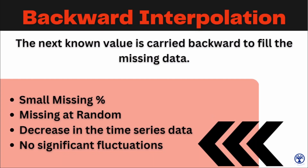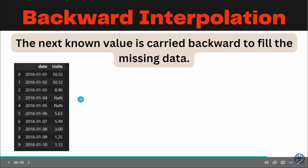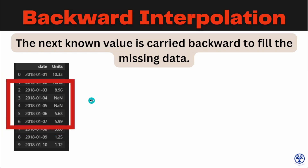Next we move to backward interpolation, which is the opposite of forward interpolation — we fill missing data with the next known value. You can use backward interpolation when the percentage of missing data is small, the missing data appears at random intervals, and there is a decreasing trend in your time series data with no significant fluctuations. For example, our data here is decreasing with no fluctuation at all.